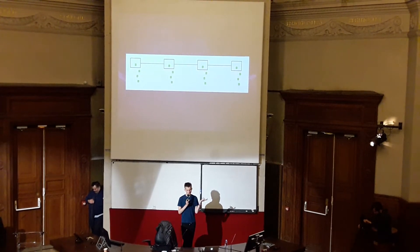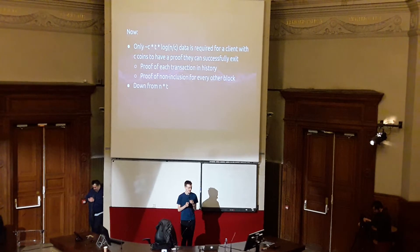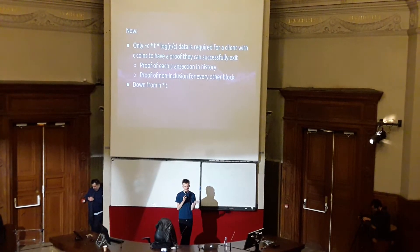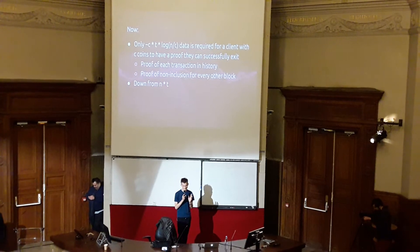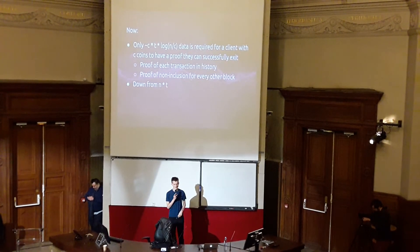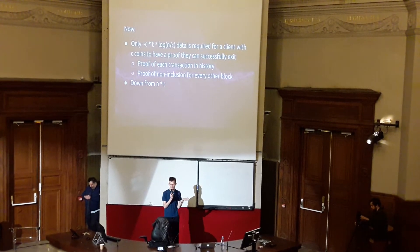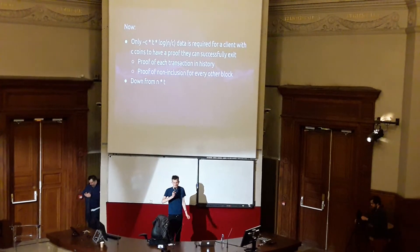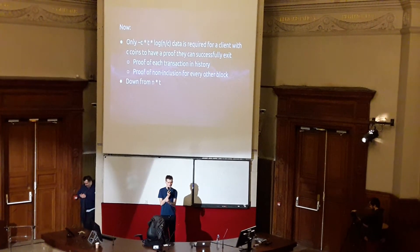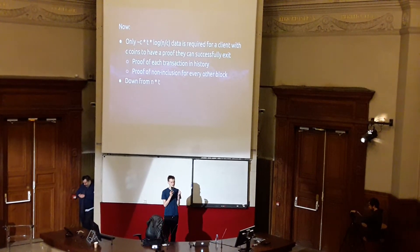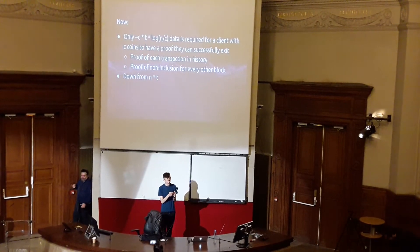So what does this mean? Well, the main benefit here is that basically the amount of data that clients need to process goes down by a lot. In a plasma, or traditional kind of minimizable plasma, if you have a plasma chain and this plasma chain in each block has a block size of N, and the plasma chain continues for T steps, then every user of the plasma chain has to download and process every plasma block, so the overhead is N times T.